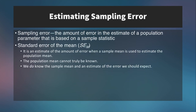When we conduct statistics on samples, we need to estimate the sampling error. Sampling error is the amount of error in the estimate of a population parameter that is based on a sample statistic. We can estimate this using the standard error of the mean, or SEM — an estimate of the amount of error when a sample is used to estimate the population mean. We know the population mean can never truly be known, but we do know the sample mean and an estimate of the error we should expect.